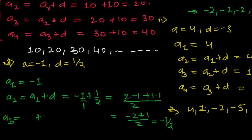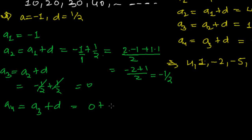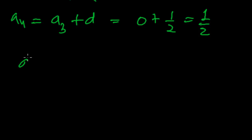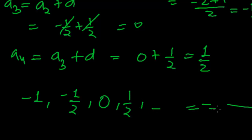Now the third term is again the addition of the common difference to the second term. The second term here is minus half, and the common difference is again half. So minus half plus half — they cancel out, giving zero. Now the fourth term — the fourth term is the addition of the common difference to the third term. The third term is zero and the common difference is half. So it is half only. Our arithmetic progression is: minus one, minus half, zero, and half, and so on. This is our required arithmetic progression — these are the first four terms.